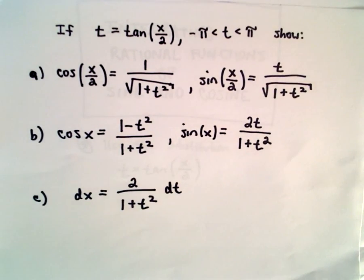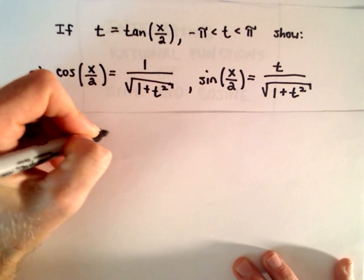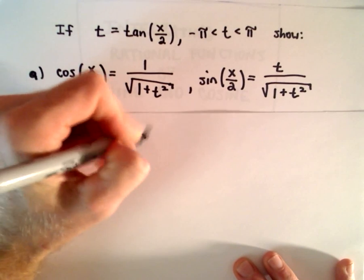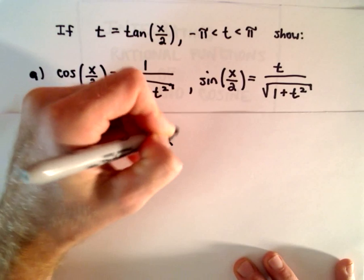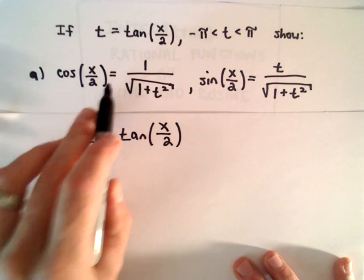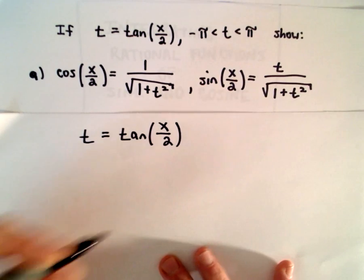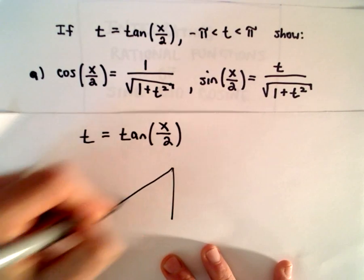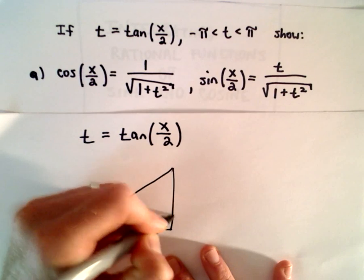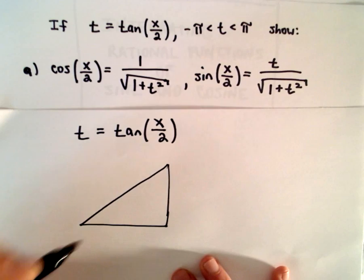So that's going to be part a, b, and c. Assuming we let tangent of x over 2 equal t, the first thing I'm going to show — part a — is that cosine of x over 2 equals 1 over the square root of 1 plus t squared. This isn't at all very difficult to do. We just use right triangles. For all of these, we're just going to use right triangles and trig identities.